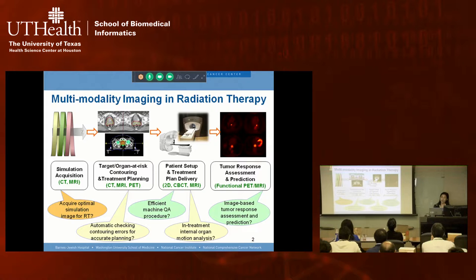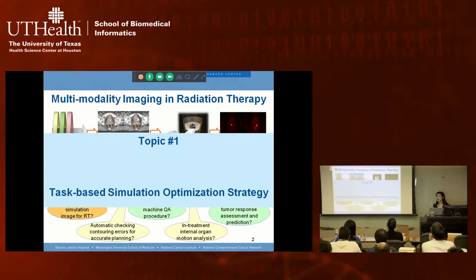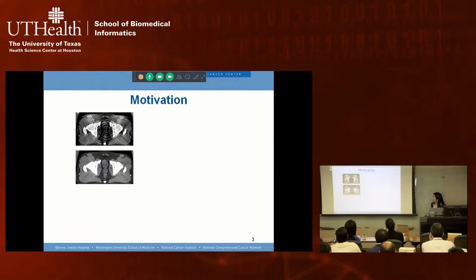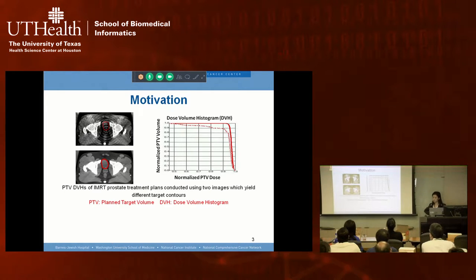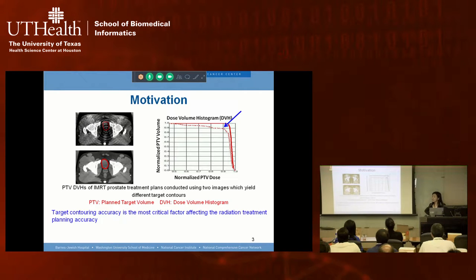To acquire the optimal simulation image for radiation therapy, I propose a task-based simulation optimization strategy. Using an anthropomorphic pelvis phantom scanned with two different protocols, we see different image quality produces different prostate contours—and based on those contours, the treatment plan shows more than 30% dose difference for the same target. This demonstrates that target contouring accuracy is the most critical factor affecting treatment planning accuracy.